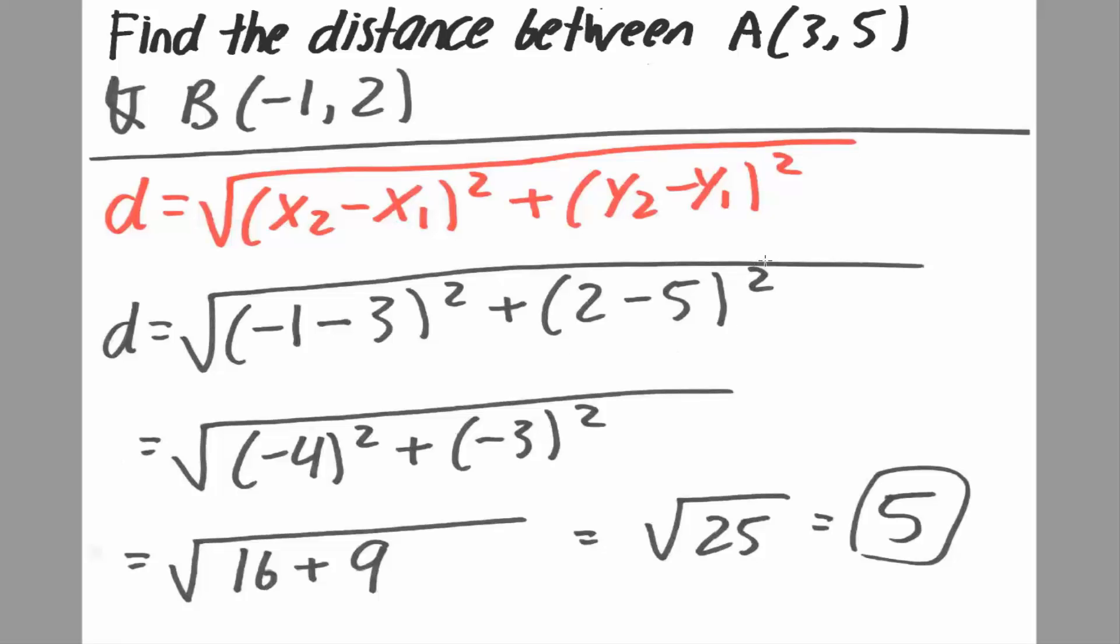Close parentheses squared. So we would get negative 1 minus 3, which is negative 4, squared plus 2 minus 5, which is negative 3, squared. So 4 squared is 16, 3 squared is 9, so we get the square root of 25, which is 5. So that is the distance between these two points.